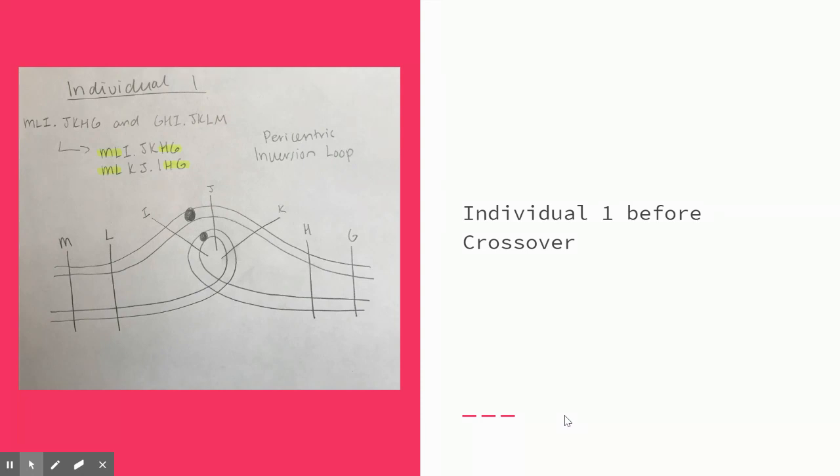Therefore, loci M, L, H, and G will not be involved in the loop. For this example, it is a pericentric inversion because the inverted area includes the centromere. The period in the image represents the centromere.